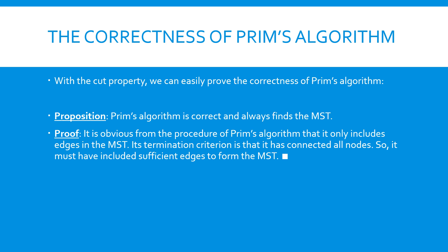Now, with the cut property, we can prove the correctness of Prim's algorithm and Kruskal's algorithm. For Prim's algorithm, its procedure aligns precisely with the conditions specified in the cut property. Specifically, the set S corresponds to the visited nodes in Prim's algorithm, and the set U corresponds to the unvisited nodes. Thus, Prim's algorithm only includes edges that are part of every MST. Additionally, Prim's algorithm terminates only when all nodes are connected, meaning that it has included enough edges to form a spanning tree. Together, Prim's algorithm is correct.